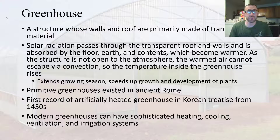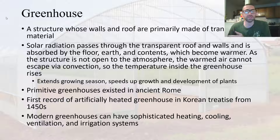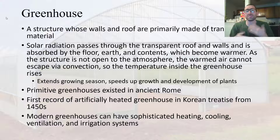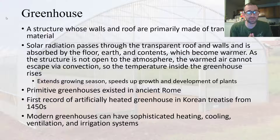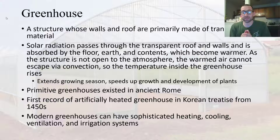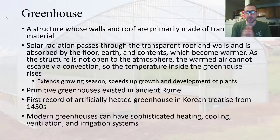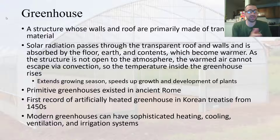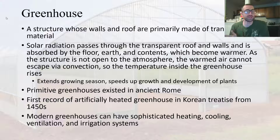Because that structure is not open to the atmosphere, the warmed air cannot escape and the temperature inside the greenhouse rises. This extends the growing season, so we can start earlier in the year and keep going later. With the warmer temperatures, this speeds up the growth and development of plants. Temperature is one of the big factors influencing plant growth, and typically up until around 86 degrees Fahrenheit, the warmer it is, the faster your plants will grow and develop.